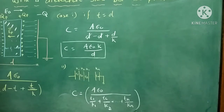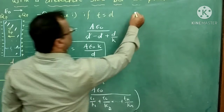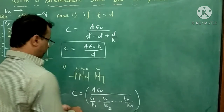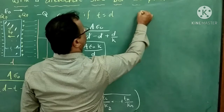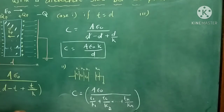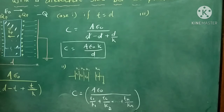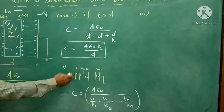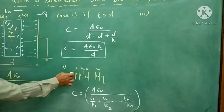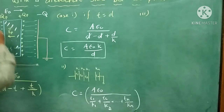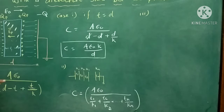This will be the formula of the effective capacitor when the free space of the capacitor is filled by different dielectric slabs in series. This will be the second case. Now we want to see the third case. When we divide the distance, this will be the series combination. But when we divide the area, that combination of capacitor is called the parallel combination.